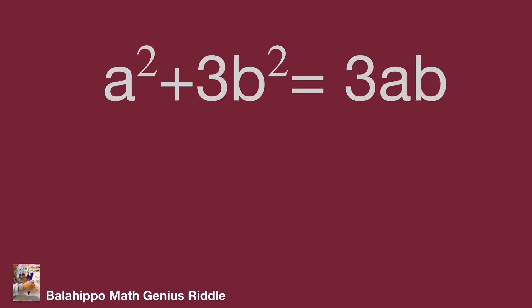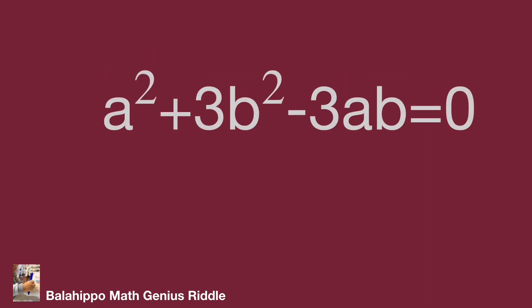First, move all the items to the same side of the equation as a² + 3b² - 3ab = 0. The first approach focuses on the items a² and -3ab. I am going to generate a perfect square from them.